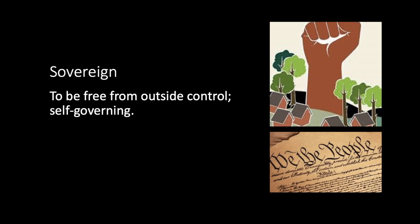The next word is sovereign. You may hear this word when we're talking about popular sovereignty. To be sovereign is to be free from outside control, or self-governing. The United States is a sovereign nation, meaning we govern ourselves. Before independence from Great Britain, the colonies were not sovereign because Great Britain was making the laws. Similarly, when Texas was with Mexico, it was not a sovereign state — Mexico was still making most of the laws.